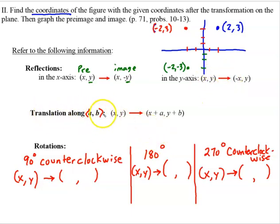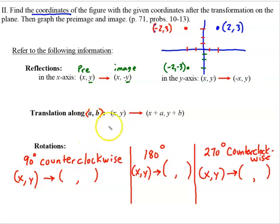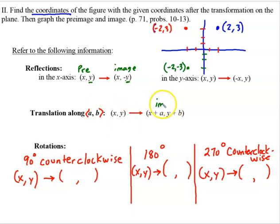A translation is really the easier of the three. This is the symbol for a vector — just think of a vector as giving us direction and telling us how far to go. If we have a point on the pre-image and it tells us to travel along a certain vector, we're going to add A to the x-coordinate of our pre-image and then add B to the y-coordinate, and that gives us the image. Every point on the pre-image will be given this vector.